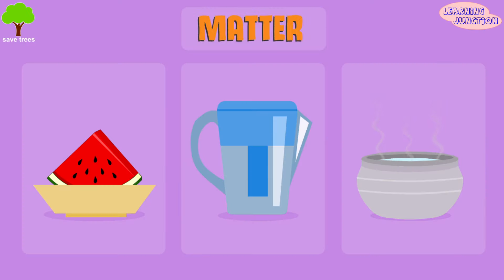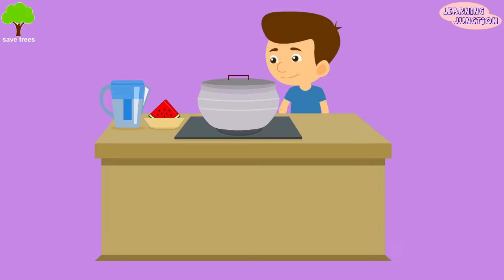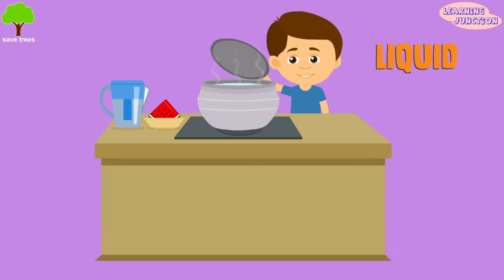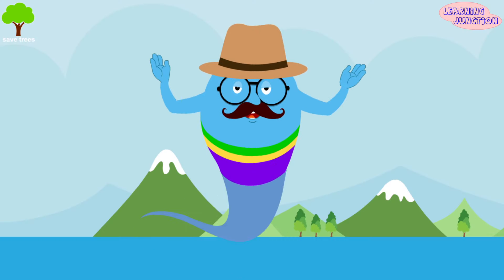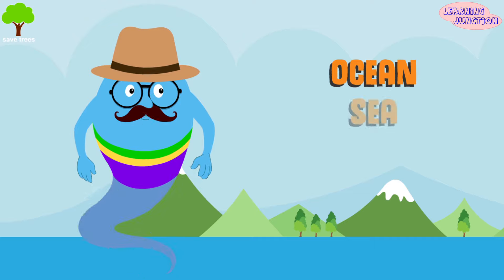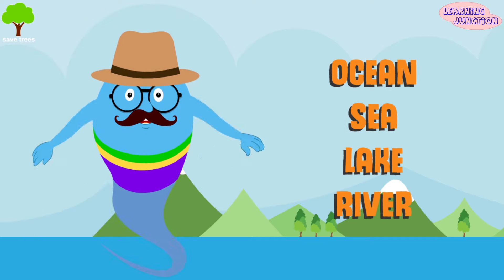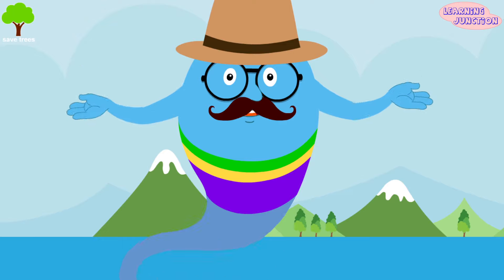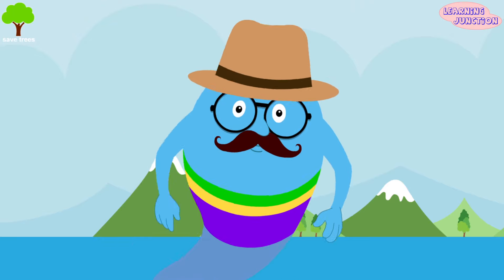As you know, matter exists in three different states: solid, liquid, or gas. In the process of evaporation, matter changes from a liquid to a gas. Scientists have proven that water bodies like oceans, seas, lakes, and rivers provide approximately 90% of the moisture in the atmosphere via evaporation.